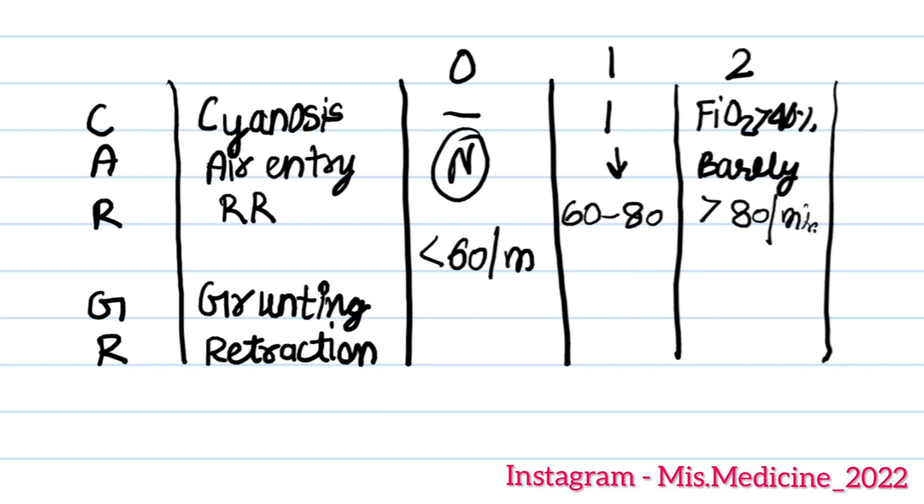Next is grunting. If you can hear that abnormal sound with a stethoscope, then it's 1. Without a stethoscope, then it's 2. If grunting is absent, then it's 0.